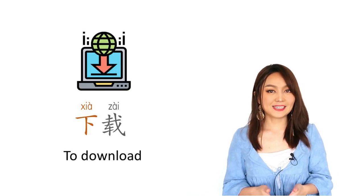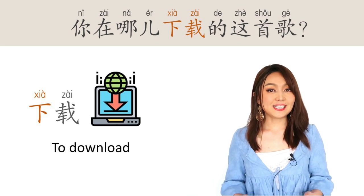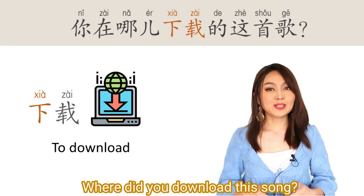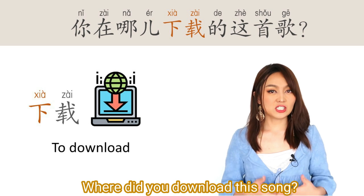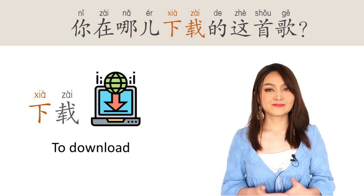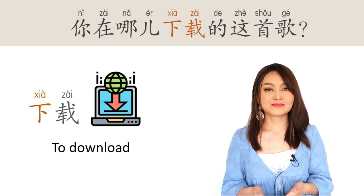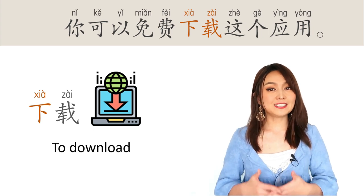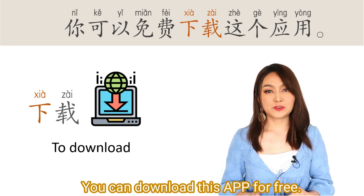下载 — download. 下载. For example: 你在哪儿下载的这首歌? Where did you download this song? Another example: 你可以免费下载这个应用. You can download this app for free.